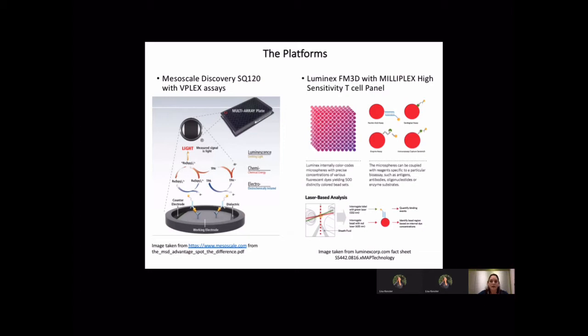The MSD platform utilizes a high binding carbon planar electrode plate that combined 10 times more antibody than a traditional polystyrene plate, and it utilizes a rubidium label detection antibody with an enhancer reagent to generate an electrode pulse chemically activated light emission captured by a high-grade CCD camera. The MSD plate provides high sensitivity and wide dynamic range without the need for machine calibration or cleaning.